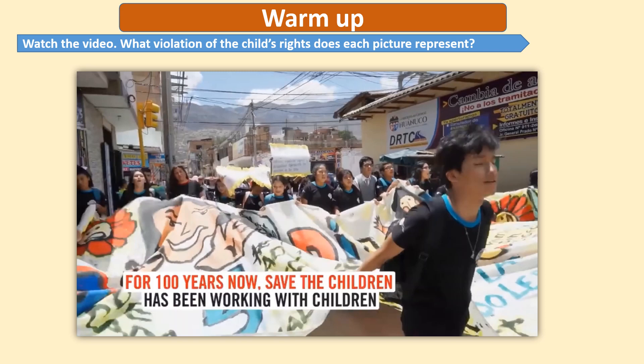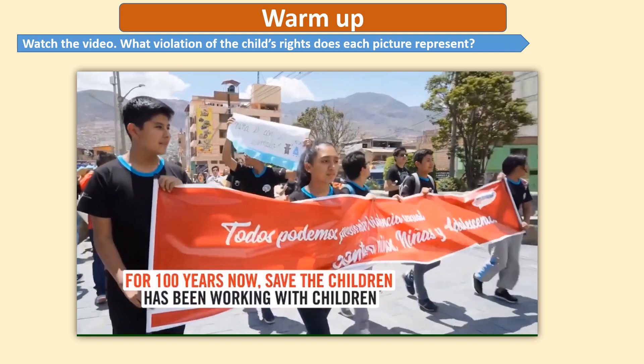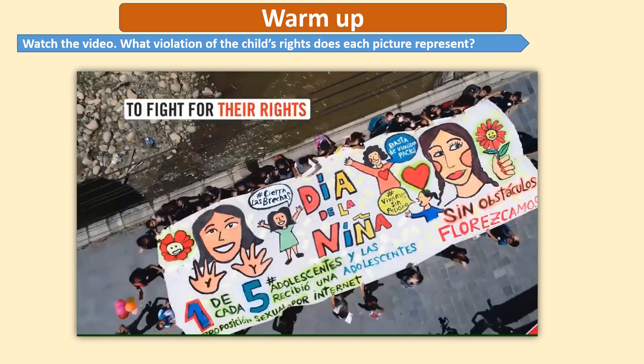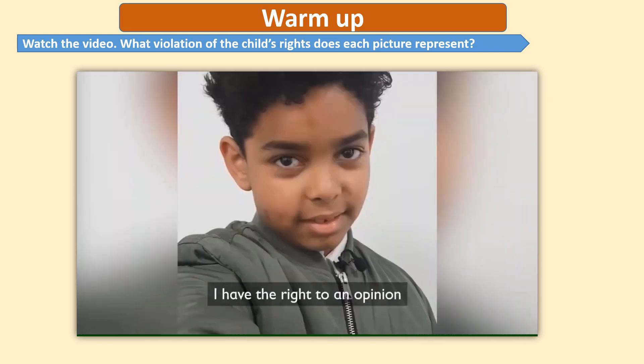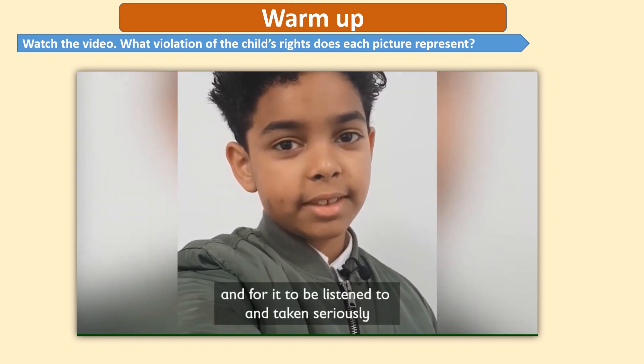This warm-up activity is meant to activate what you already know about the topic of the reading. So I'd like you to watch the video and say what violations of child rights each picture represents. One example: 'I have the right to an opinion and for it to be listened to and taken seriously.'